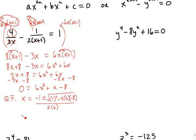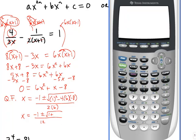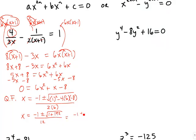Simplifying, x = (−1 ± √(1 + 192)) / 12 = (−1 ± √193) / 12. Since 193 is not a perfect square and not divisible by any perfect squares, we're done. These are our two solutions. For rational equations, remember to verify that no solution makes the original denominators zero. The values that would do that are 0 or −1, and neither of those is a solution, so both are valid.